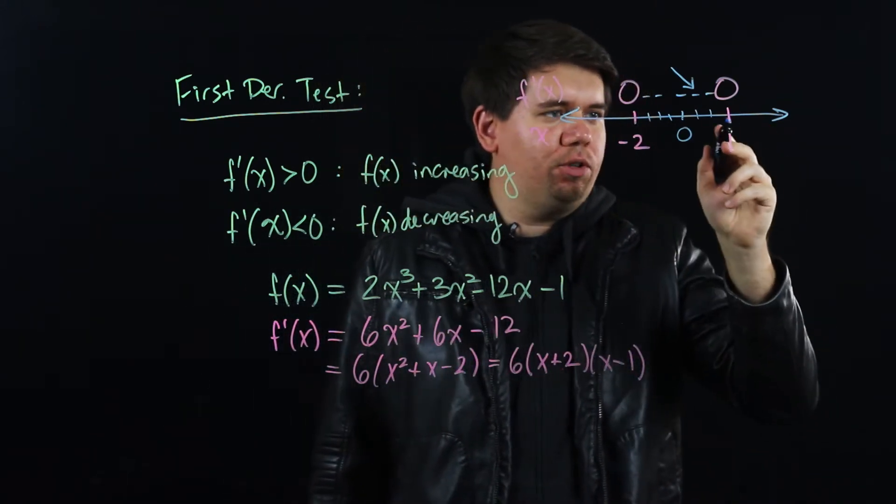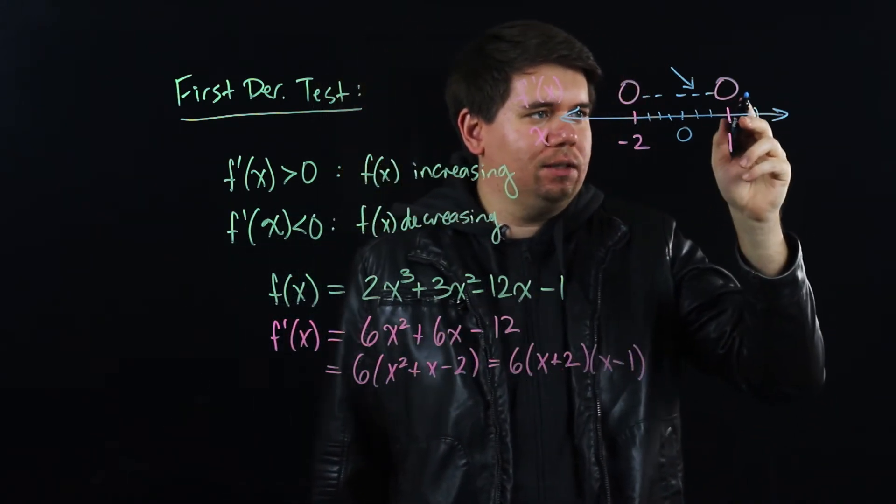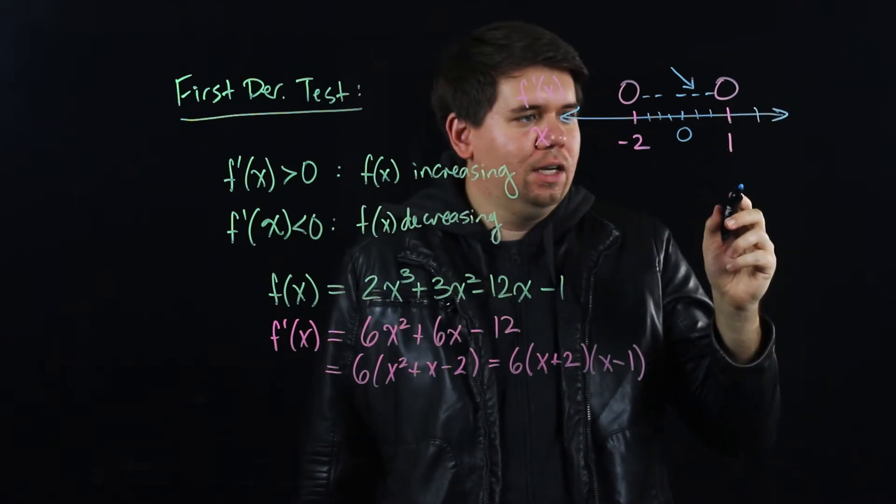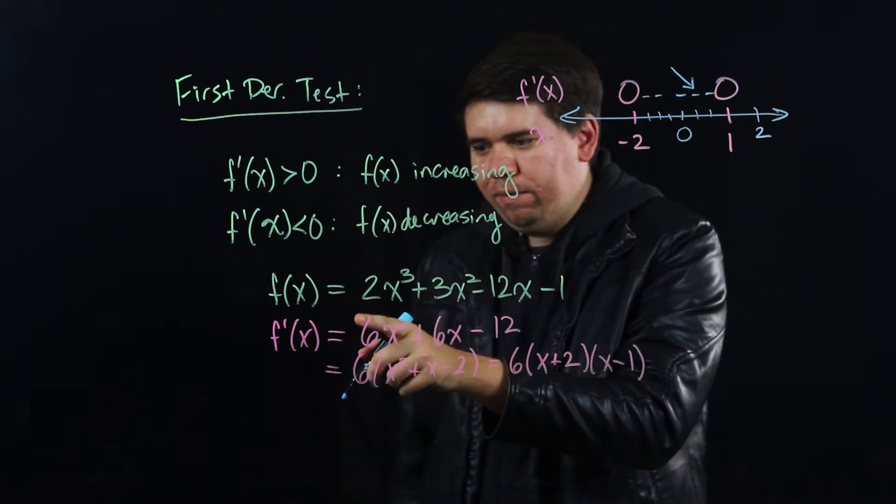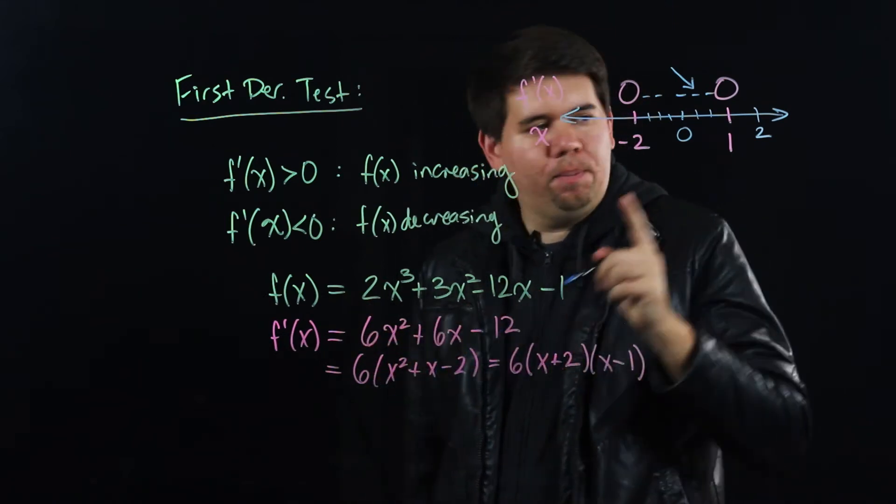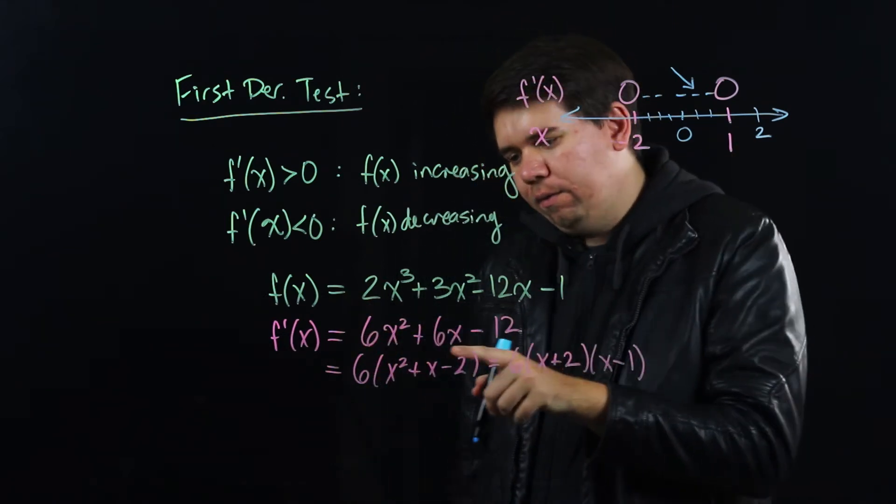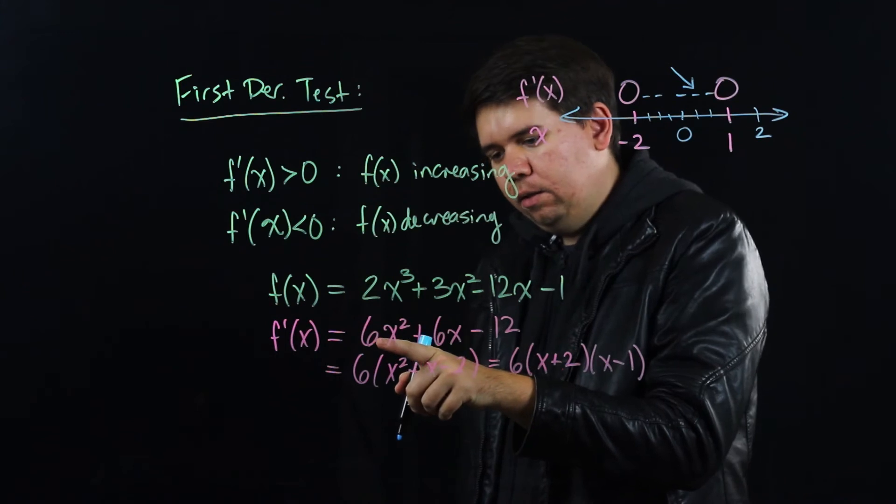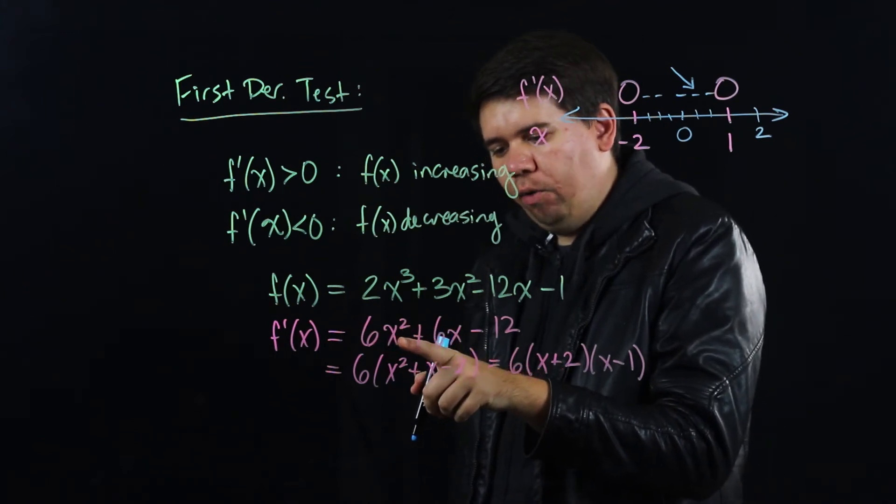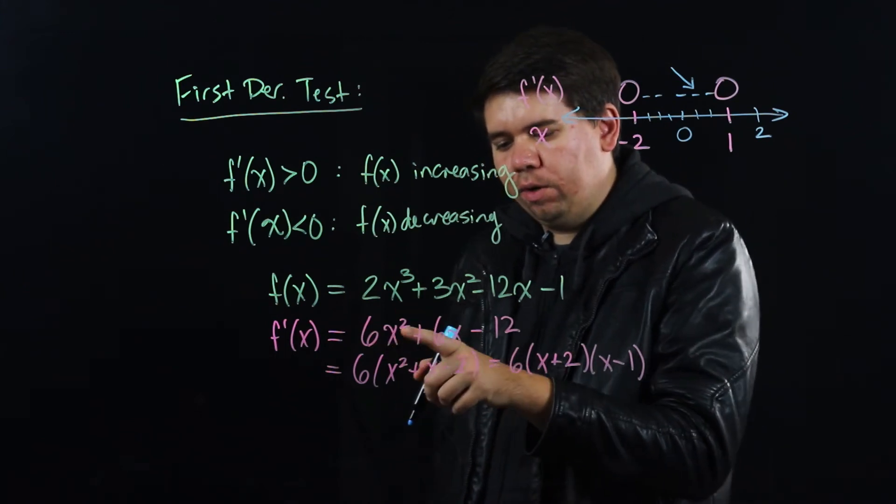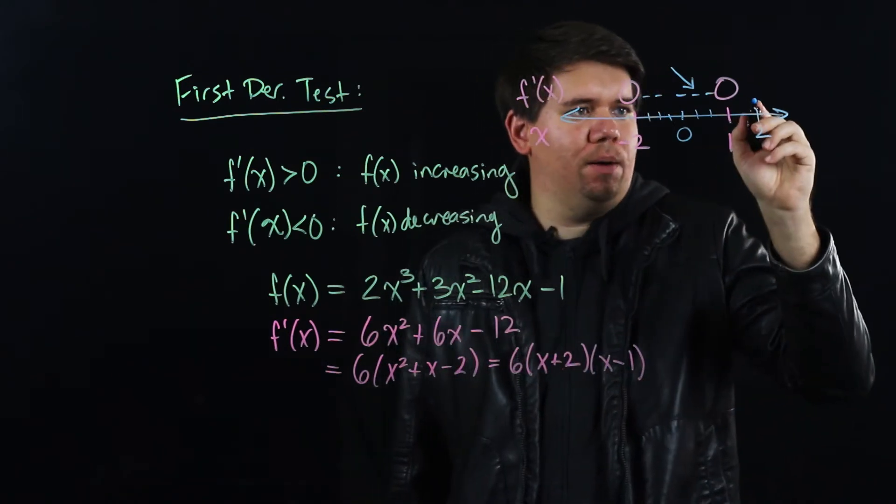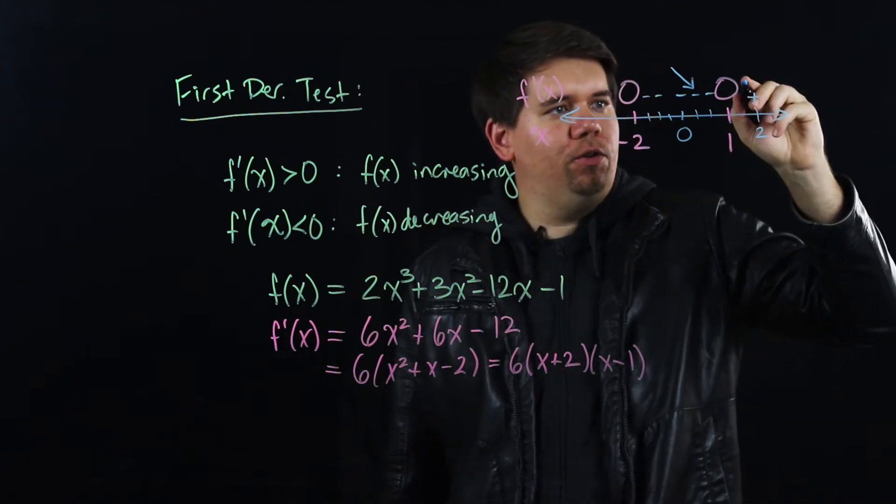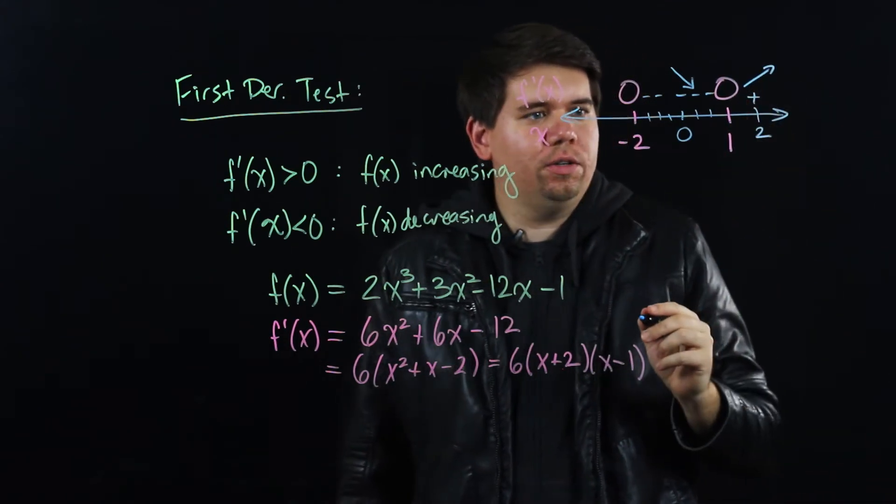Similarly, we only need to test one number to the right of 1 to find out what's going on here. Is it increasing or is it decreasing? So pick some number, some number like 2. Plug it into your derivative to see what happens. When I plug 2 into my derivative, I get 2² is 4 times 6 is 24 plus 12 is 36 minus 12 is 24. That's a positive number. So here at 2, my function is increasing.